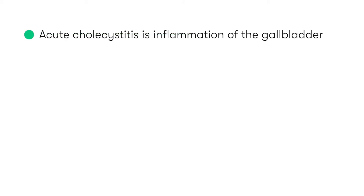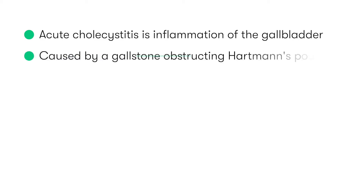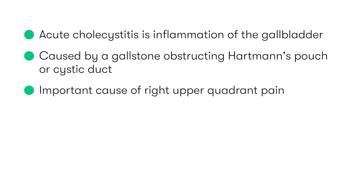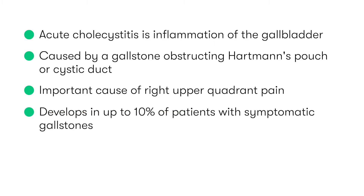Acute cholecystitis is the inflammation and potential infection of the gallbladder, and occurs typically as a result of the obstruction of Hartman's pouch or the cystic duct by a gallstone. It's an important cause of right upper quadrant pain and develops in up to 10% of patients who have symptomatic gallstones.